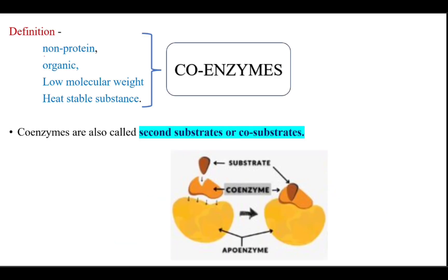So coenzymes are non-protein, organic, low molecular weight, and heat stable substances. These are all in contrast to the enzymes — enzymes are protein in nature, have high molecular weight, and are heat labile substances — whereas coenzymes are non-protein, organic, low molecular weight, and heat stable.